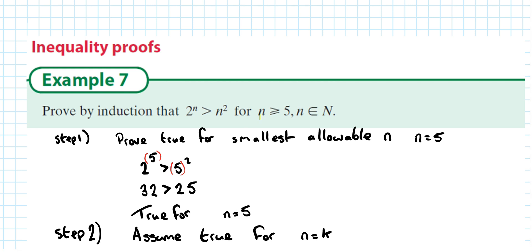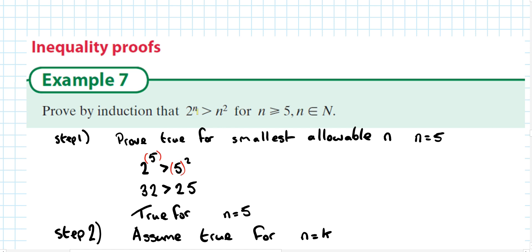Step 1: prove true for the smallest allowable n. The reason I say smallest allowable n is because there's going to be a restriction — n has to be greater than or equal to 5, so the smallest allowable n is 5. Testing n=5: on the left hand side we get 2 to the power of 5, which is 32. Right hand side: 5 to the power of 2, which is 25. So it is true for n equals 5.